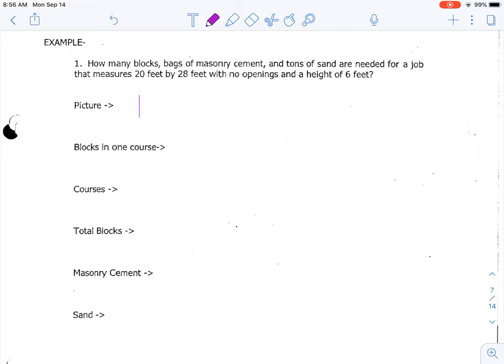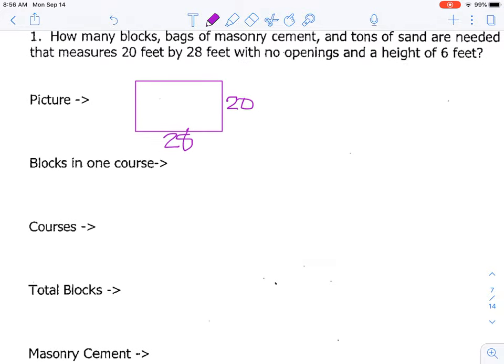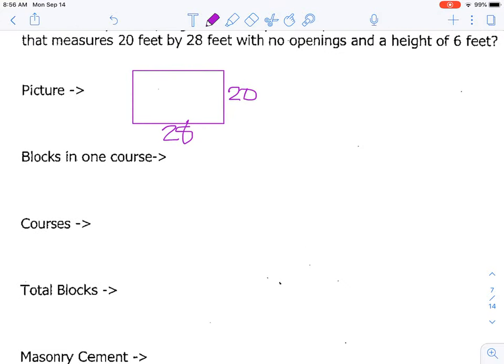We want to sketch a little picture. It says how many blocks, bags of masonry cement, and tons of sand are needed for a job that measures 20 by 28 with no openings and a height of six feet. So the very first thing that we need to do is find the linear feet. And when we find the linear feet, it means that we just add all of the dimensions together. Or it's the perimeter of the building. Or it's the part that touches the ground. So our linear feet is 96 feet.